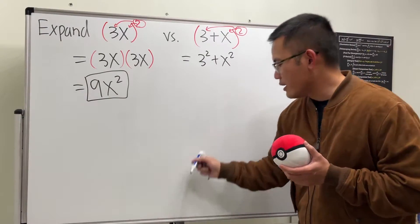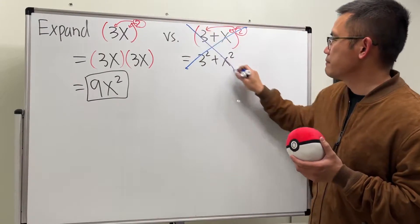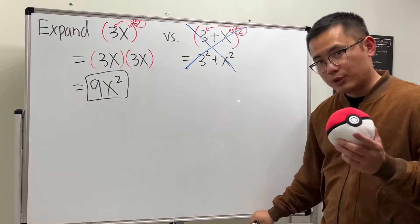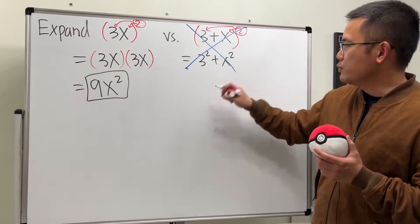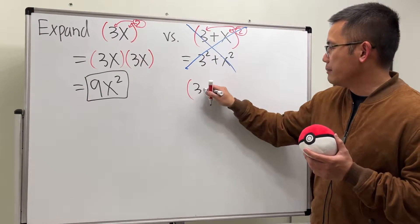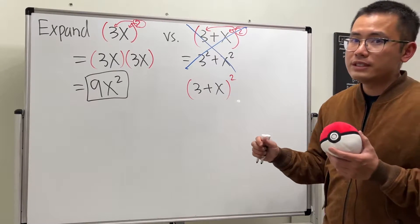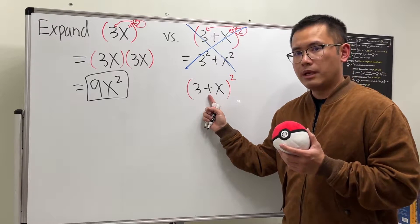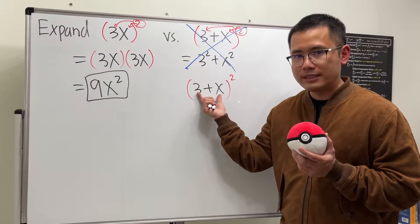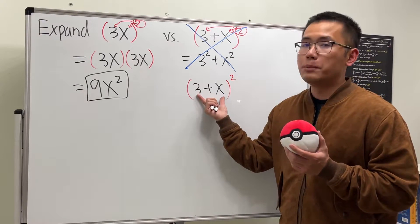Don't do that. So I'll show you guys the right way to do it. Now for this one, (3 + x)², the big difference is that we have a plus in between, so we have a binomial inside, meaning that we have two terms inside.